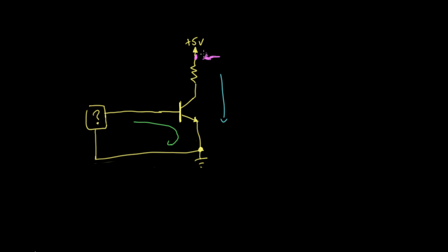The voltage between the top and ground is 5 volts — it's always 5 volts, because that point is always connected to 5 volts. Conversely, at the emitter, it's connected directly to ground, so there's zero voltage there. But what about the point right at the collector — let's call it point A? When the transistor is off, the voltage at A is going to be 5 volts, because there's no conductivity through the transistor. This point is connected through the resistor to 5 volts, and there's no other place for electrons to go.